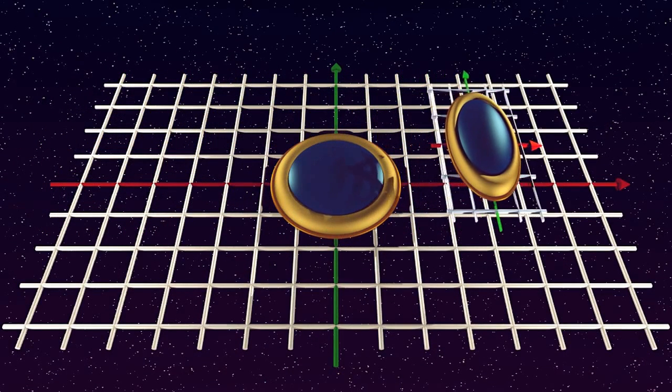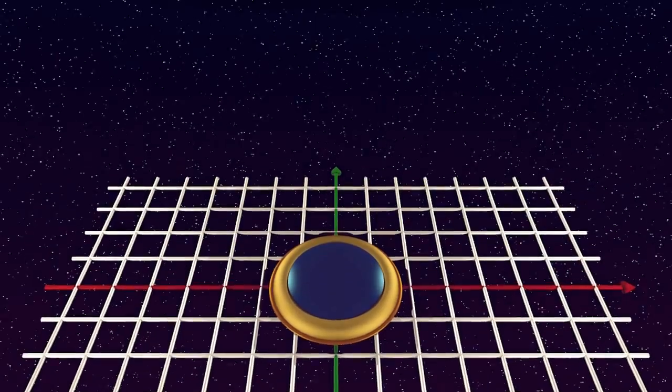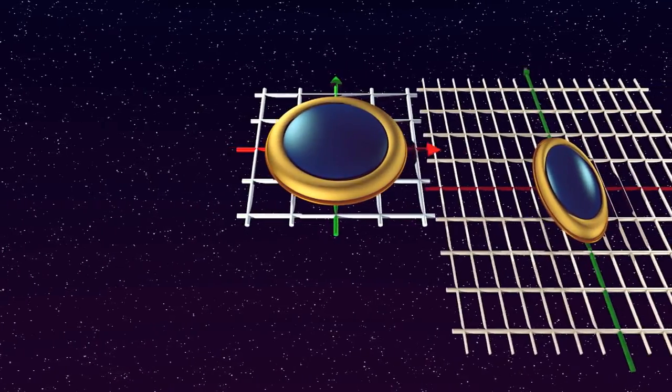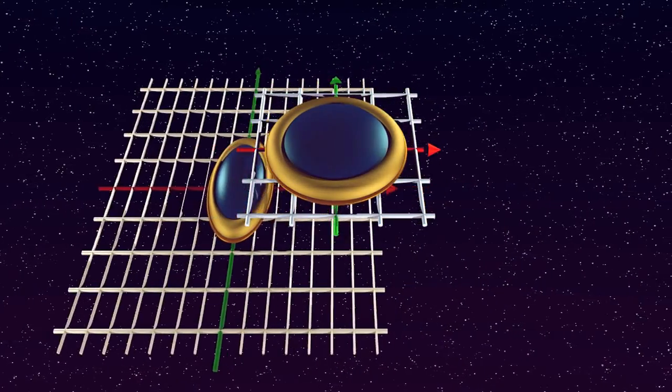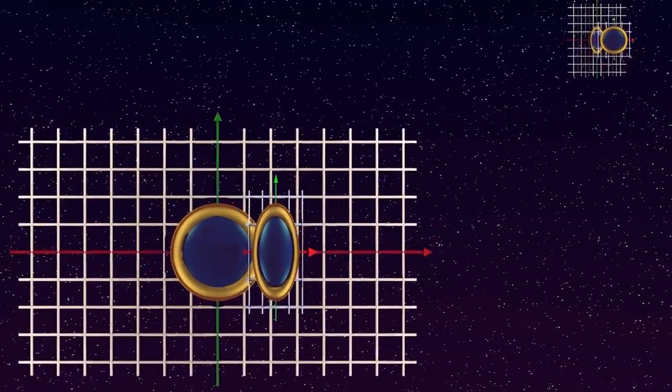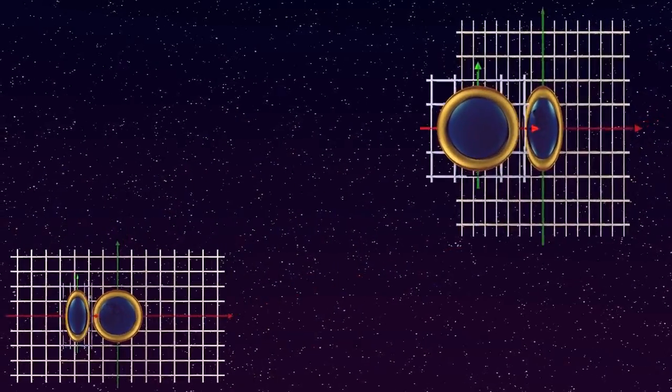When two identical labs move relative to each other at relativistic velocity, each sees the other undergoing length contraction along the direction of motion. When they pass each other, each one sees the other short enough to fit entirely within itself.